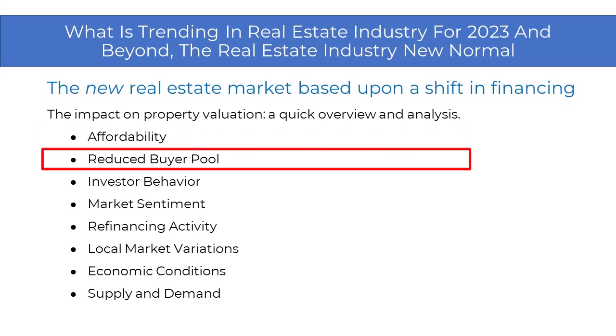What you get is a reduced buyer pool. Changes in market conditions can lead to a reduction in the pool of potential buyers. Factors such as economic uncertainty, job market fluctuation, and more stringent lending criteria can limit the number of qualified buyers. A diminished pool of buyers exerts downward pressure on property — that's basic economics covered in the pre-licensing course. One of the topics of value was how many people are interested in the property, and if you reduce the number of potential buyers, you reduce the value. Sellers will often face a challenge finding buyers willing to meet the asking price.